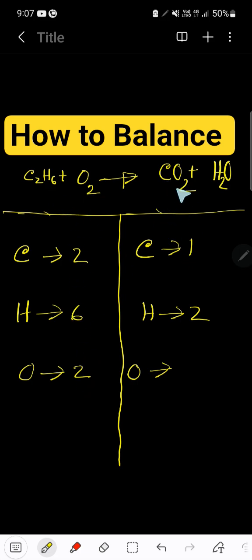On the right-hand side we have 1 carbon atom, 2 oxygen atoms in CO₂, then 2 hydrogen atoms and 1 more oxygen in H₂O, totaling 3 oxygen atoms. For combustion reactions, try to balance the more electronegative oxygen last.